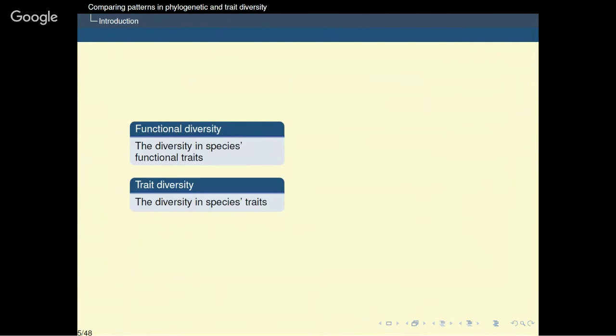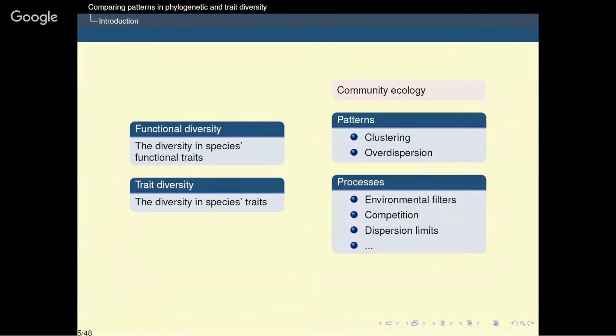In parallel, a trait is also often considered functional as regards a certain ecosystem process or its response to environmental variations. Hooper and colleagues, referring to Lavarelle and Garnier, defined functional traits as those that influence ecosystem properties or species' responses to environmental conditions. So, functional diversity is the diversity in species' functional traits, while more generally, trait-based diversity is the diversity in species' traits. In ecology, functional diversity is mostly studied to disentangle the processes that structure species' assemblages, including competition, dispersion and environmental filtering.